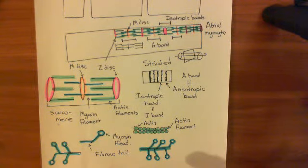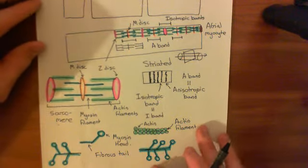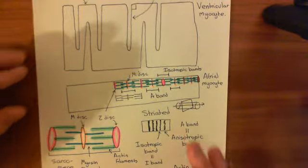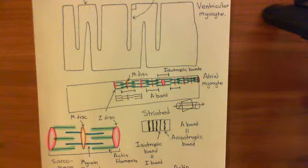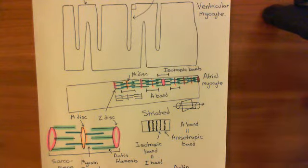Welcome to this next video in which we are discussing cardiac muscle contraction. We've now discussed the structure of a cardiac muscle cell and the contractile machinery within it. We now want to discuss excitation-contraction coupling — how are we going to make an action potential cause contraction of the muscle structure?